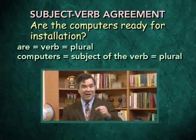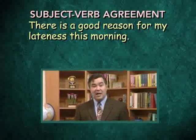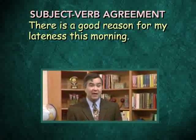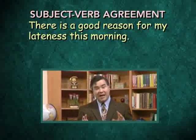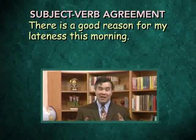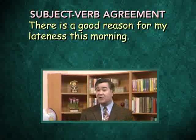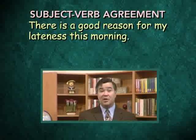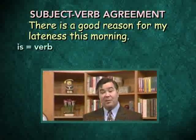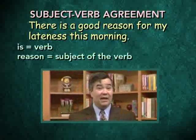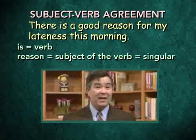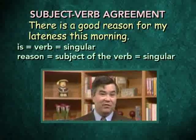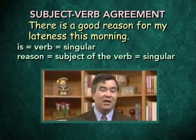One more example: 'There is a good reason for my lateness this morning.' In English, many sentences begin with 'there is,' 'there are,' 'here is,' 'here are.' You might at first think that 'there' or 'here' is the subject, but neither of those is a noun, so they can't really be the subject. In sentences that begin with 'there' or 'here,' the verb normally precedes the subject. In this case, the verb is 'is,' and what follows — 'reason' — is actually the subject. 'Reason' is singular, and so the singular verb 'is' is correct. When a sentence begins with 'there' or 'here,' the subject normally follows the verb, so look after the verb to find the subject.